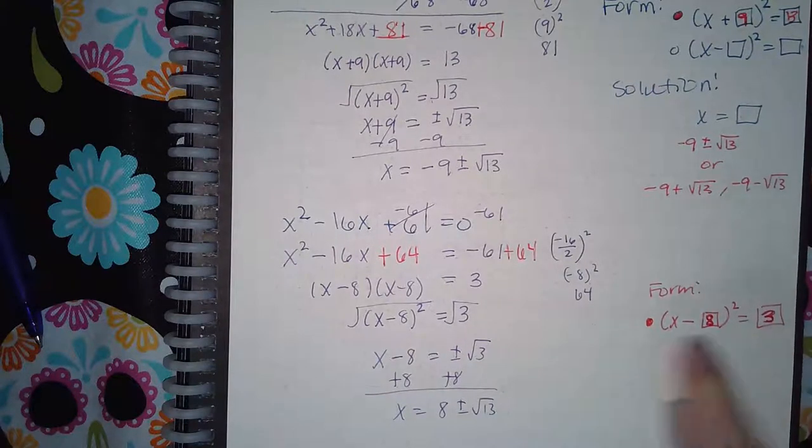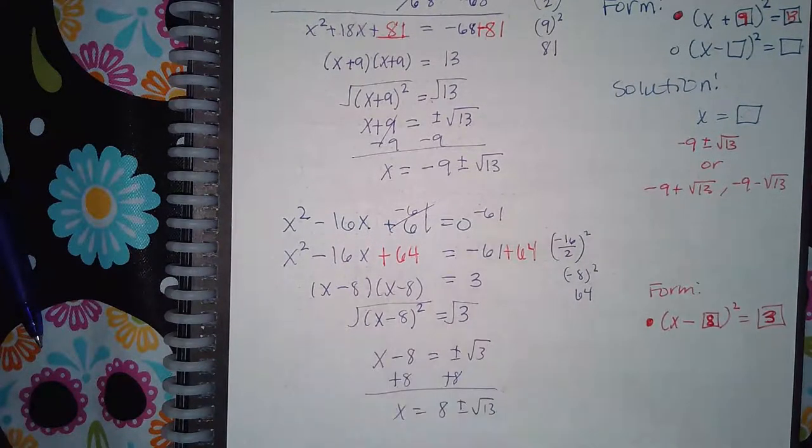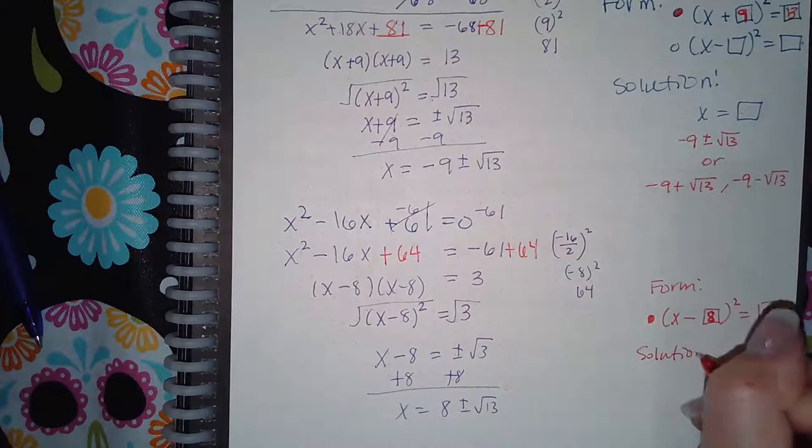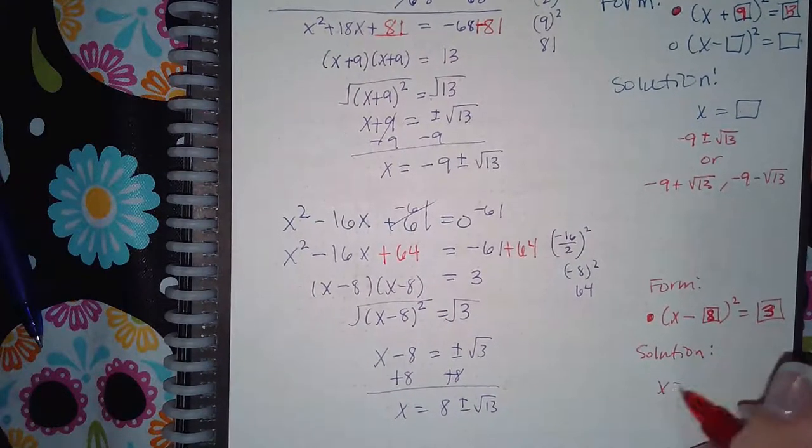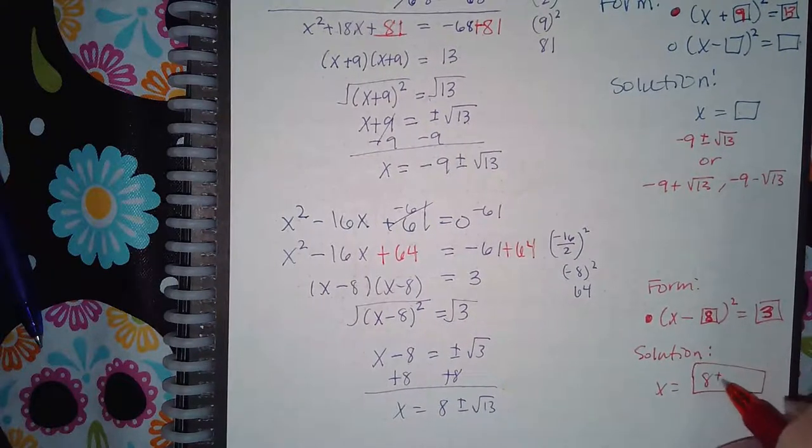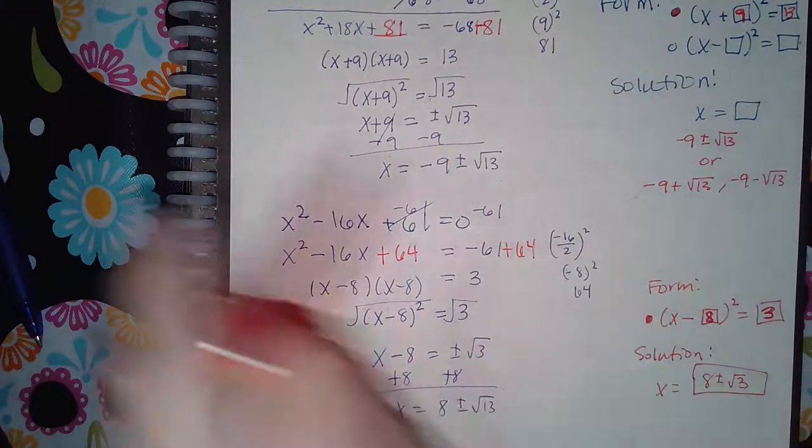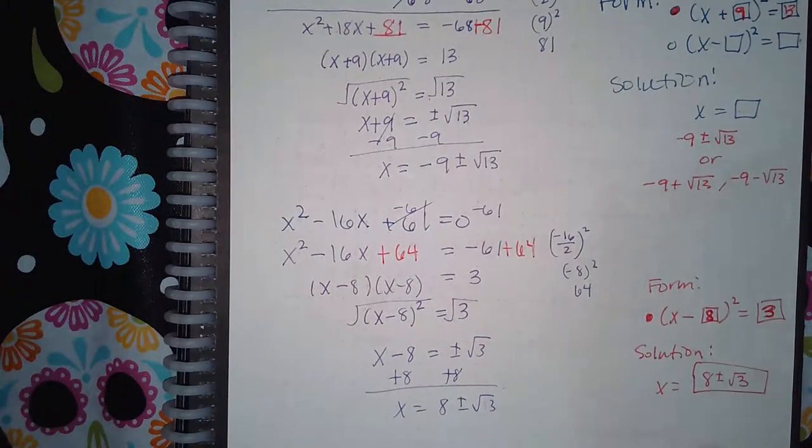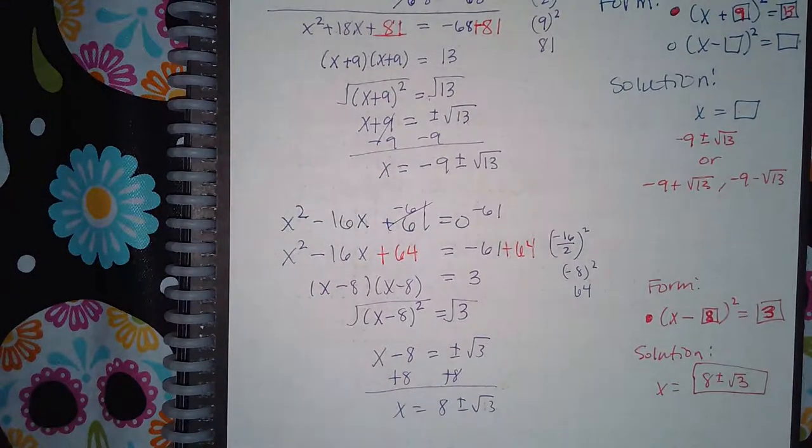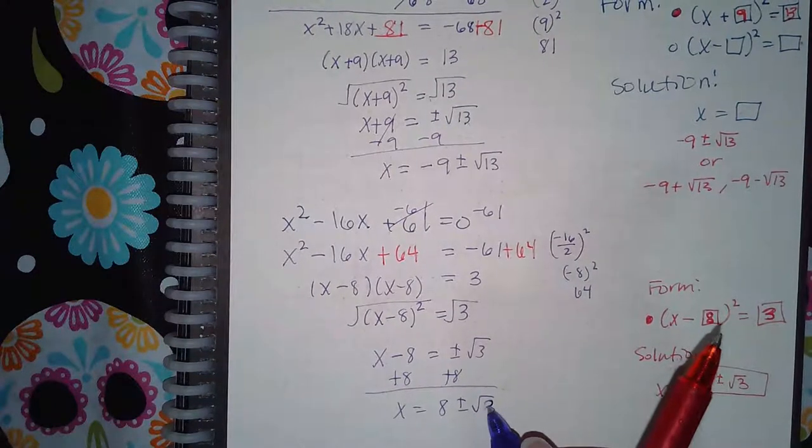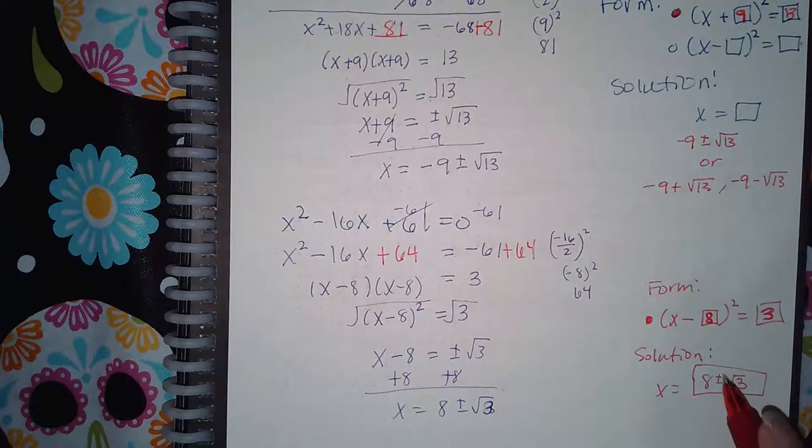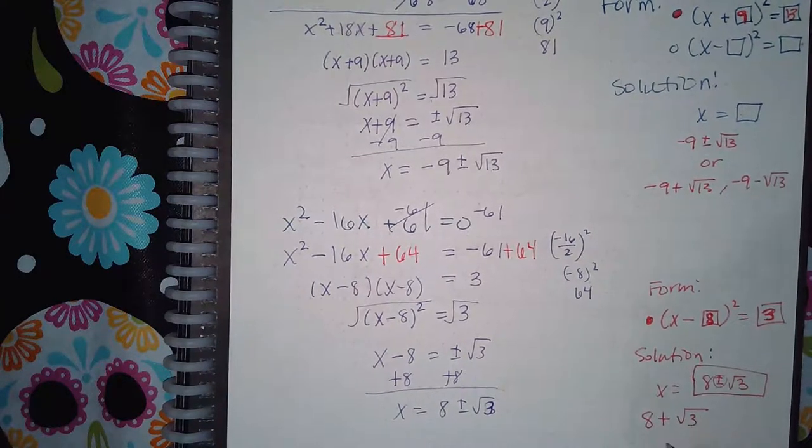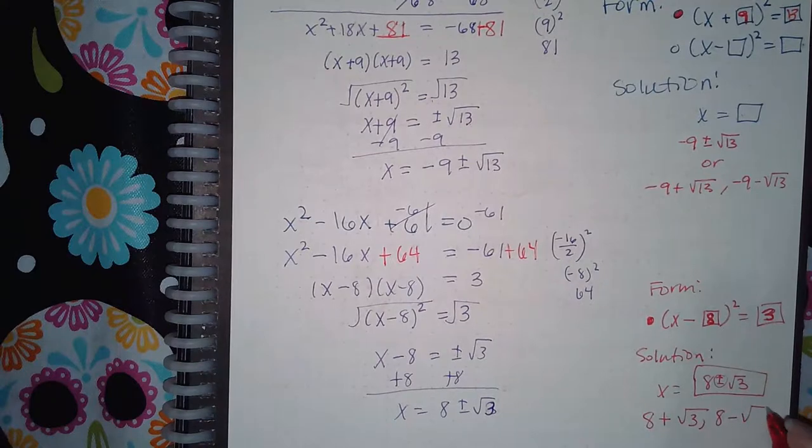This is what we got before we took the square root on both sides. And then as far as the solution, you can either type in 8 plus or minus the square root of 3—I don't know where that came from, should be the square root of 3—or if it doesn't allow you to type in this symbol, you can type 8 plus square root of 3 comma 8 minus square root of 3.